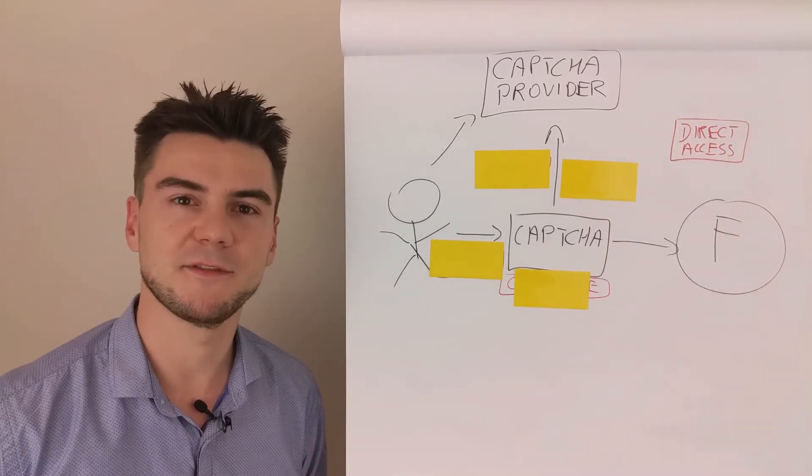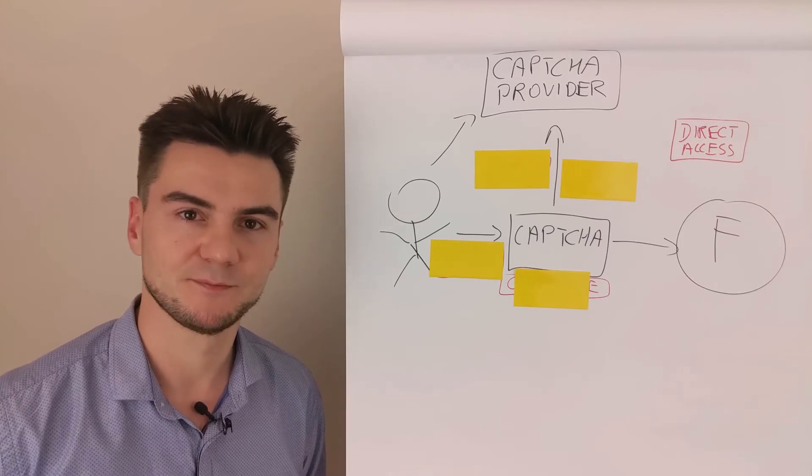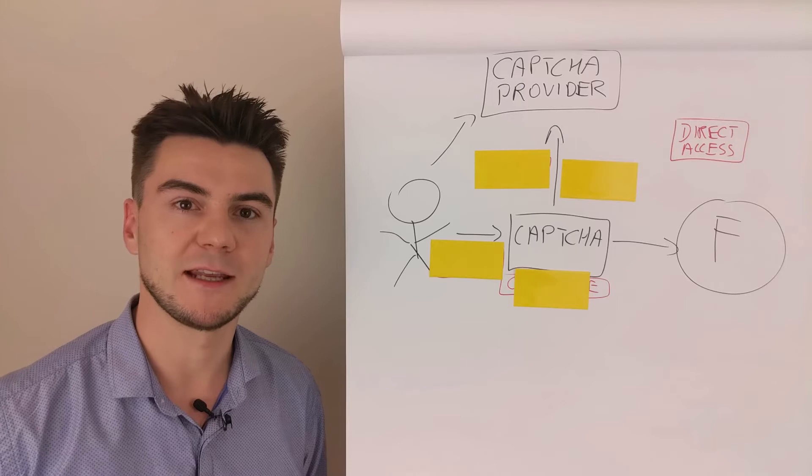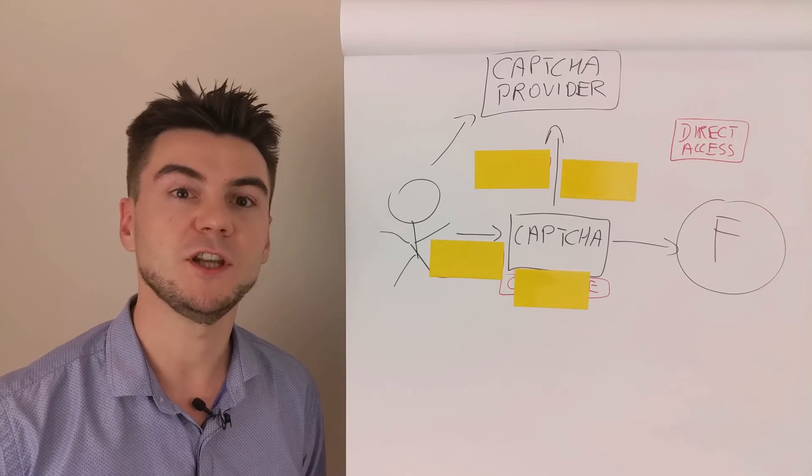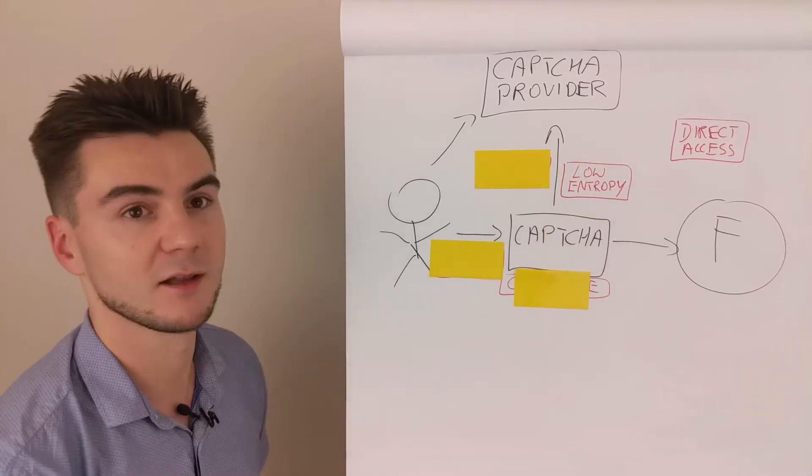The second attack vector is probabilistic. Low entropy of the CAPTCHA challenge could allow the attacker to build a correct response for each of the possible challenges. So we've got the low entropy here.